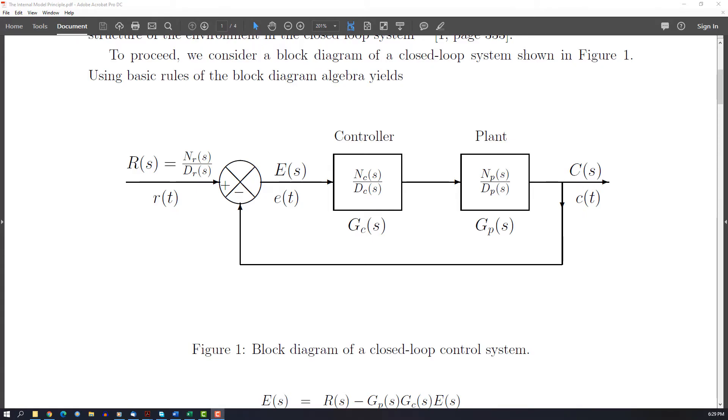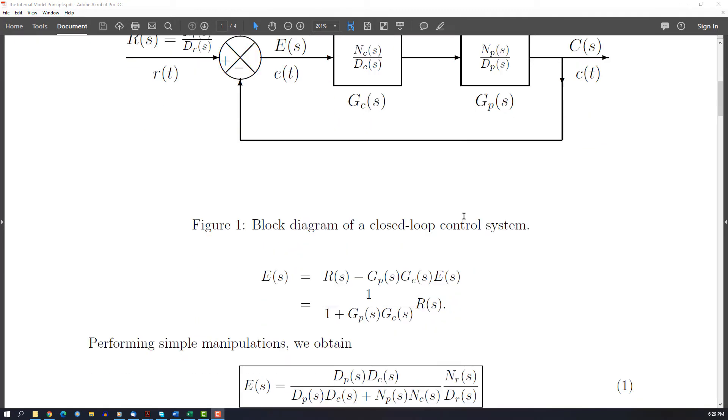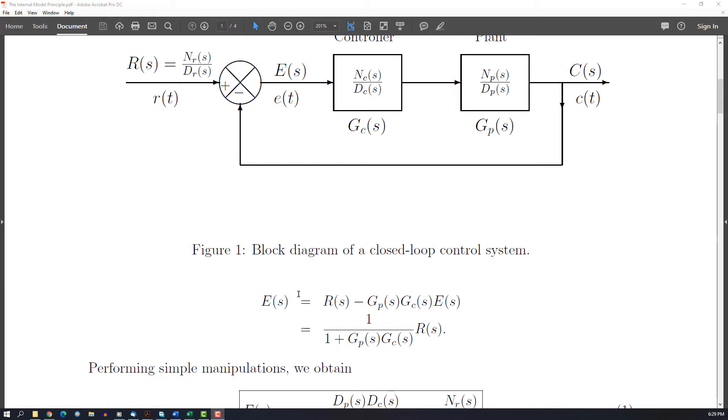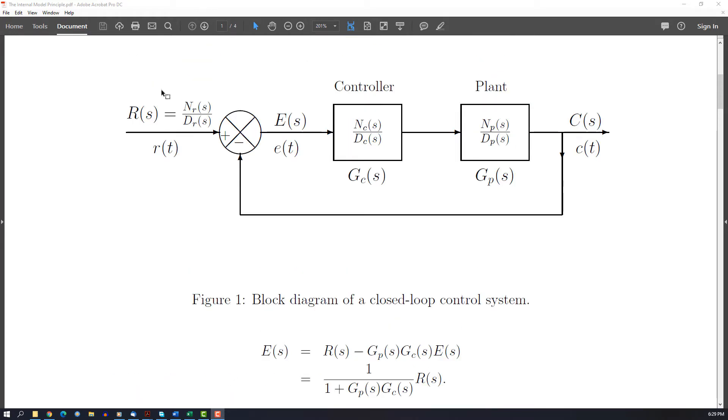The internal principle - let's consider how to put feedback with a simple controller. Here we have the reference, controller, and then the plant, and here is the error between the reference and the output of the plant.